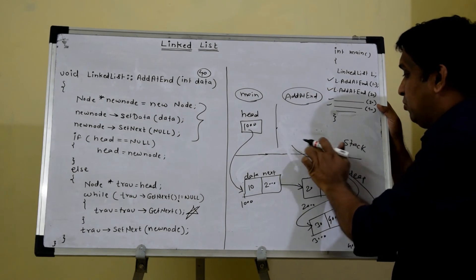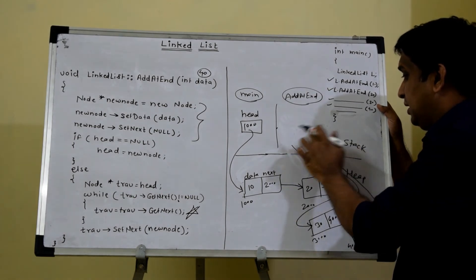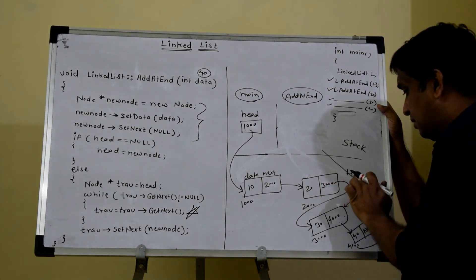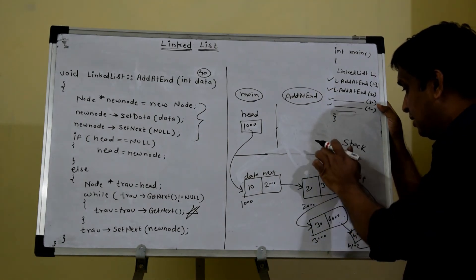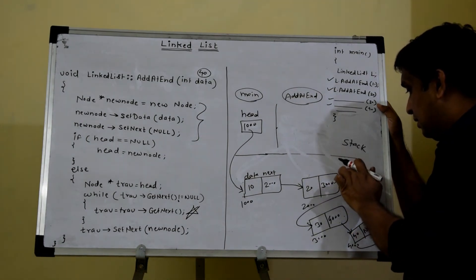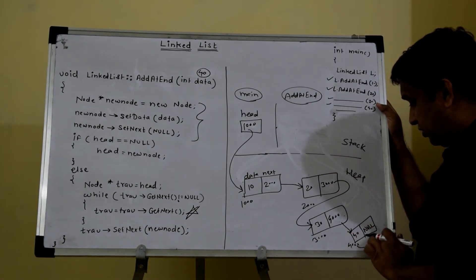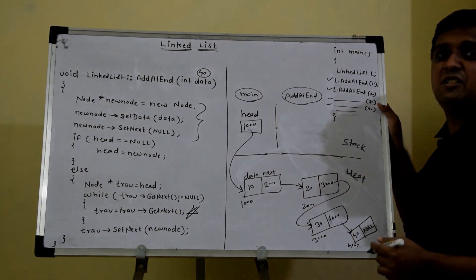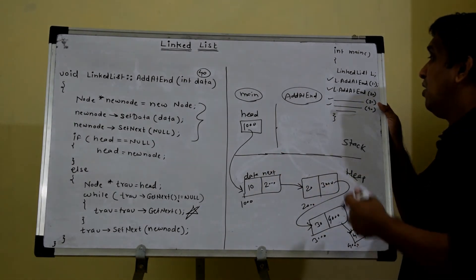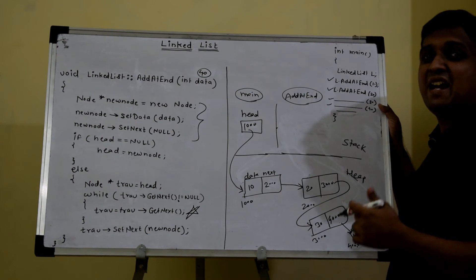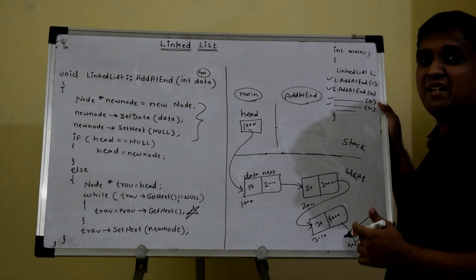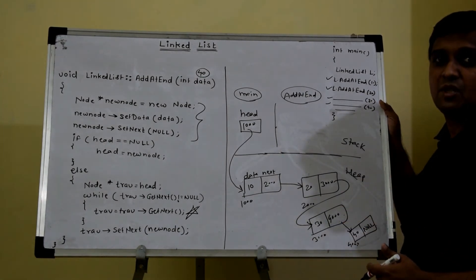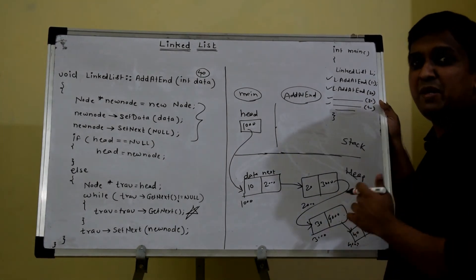There won't be trav and new_node anymore, and now you have a linked list with four nodes. This is how execution happens — every time you call add_at_end it adds a node at the end. Let's now implement this function.